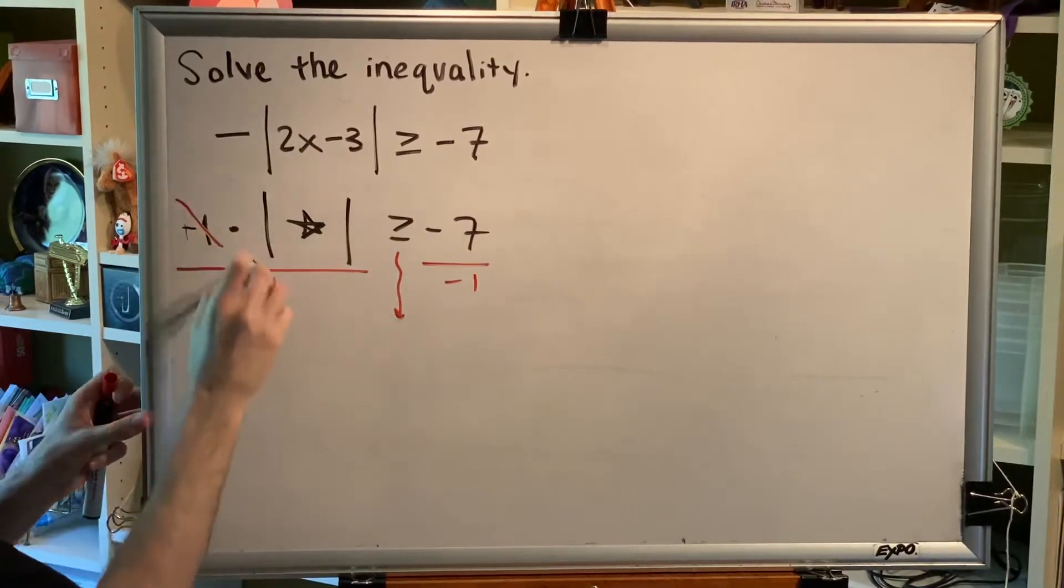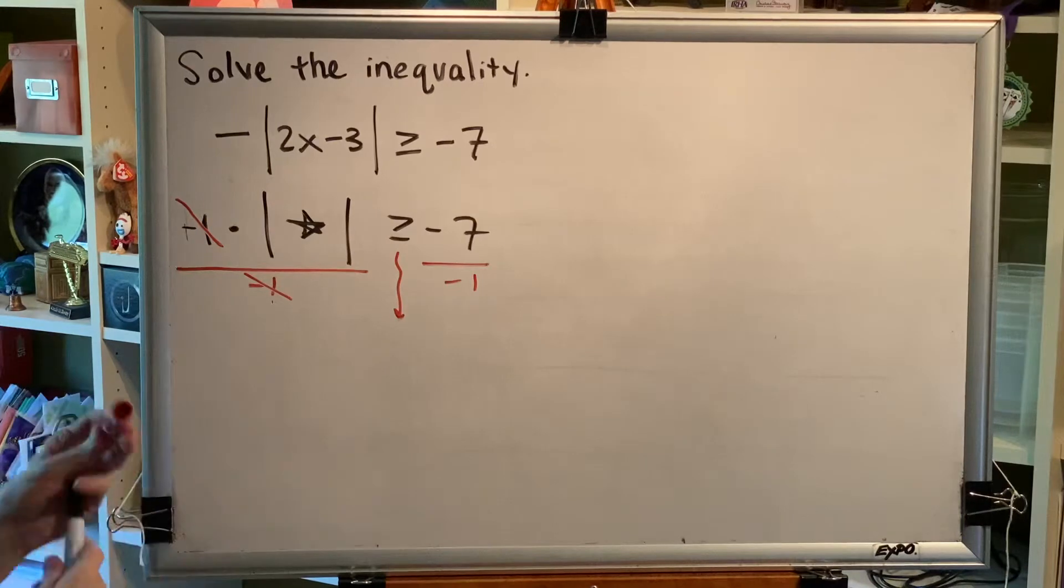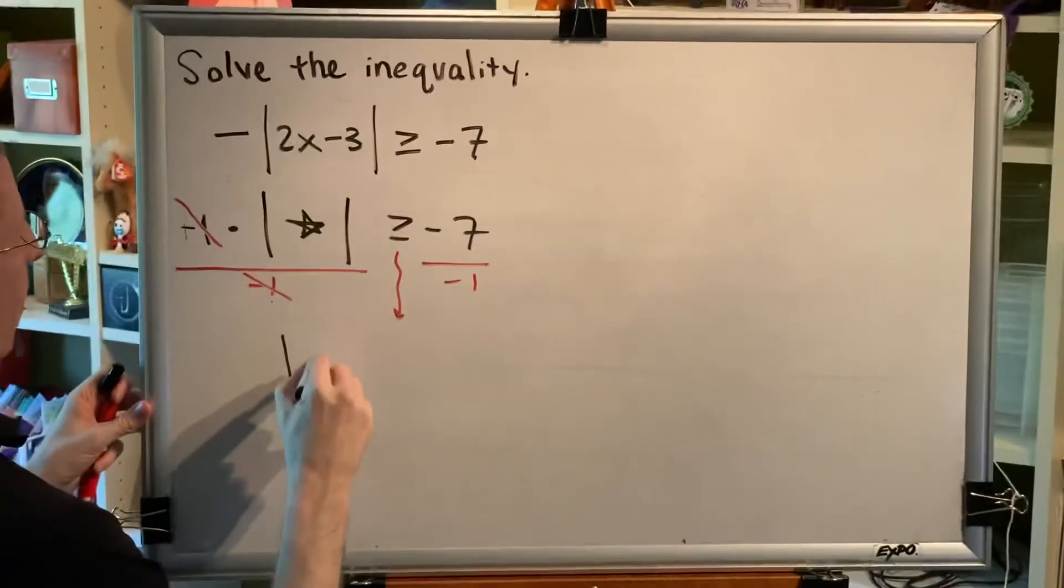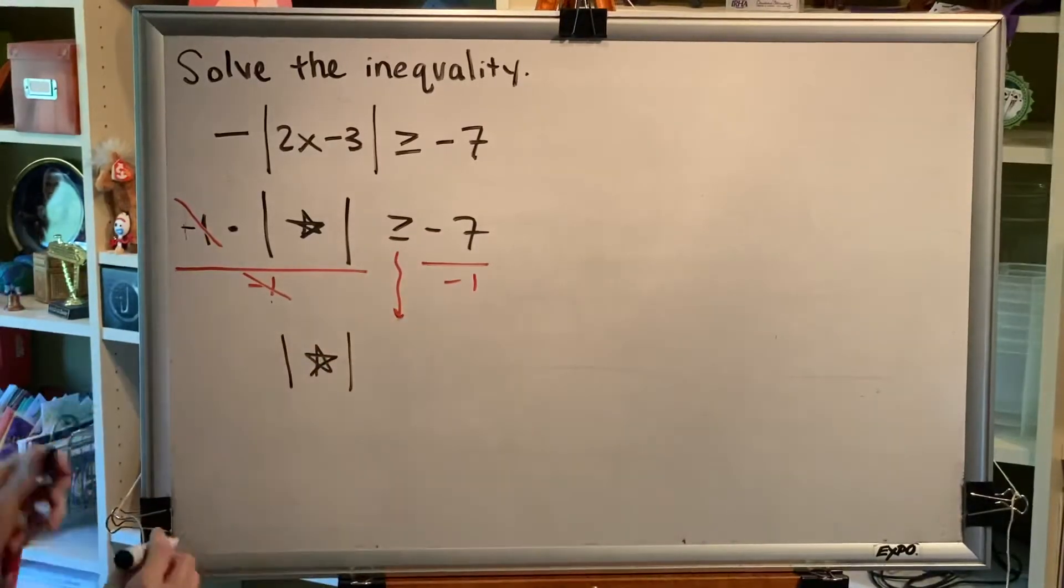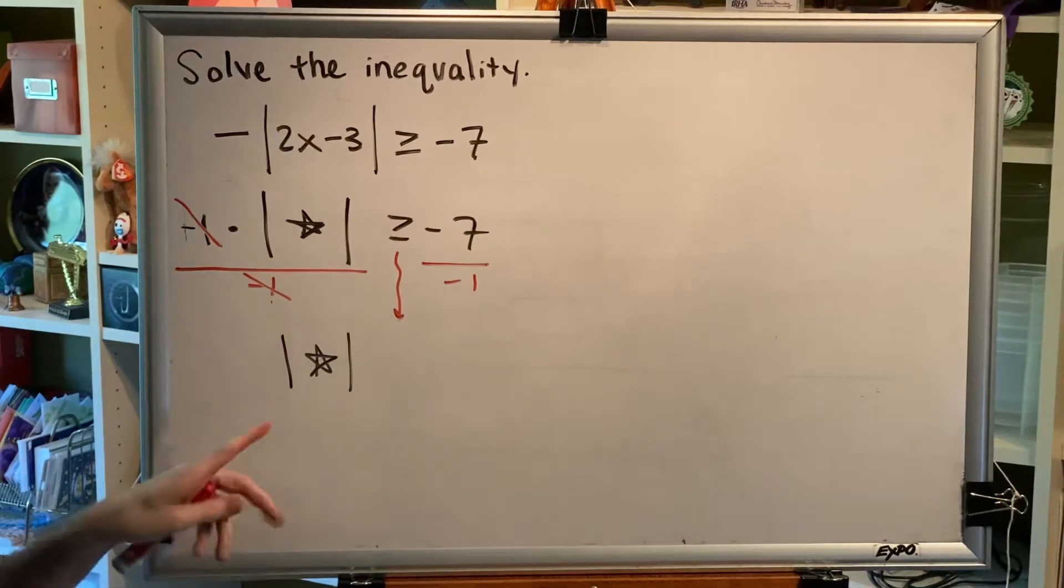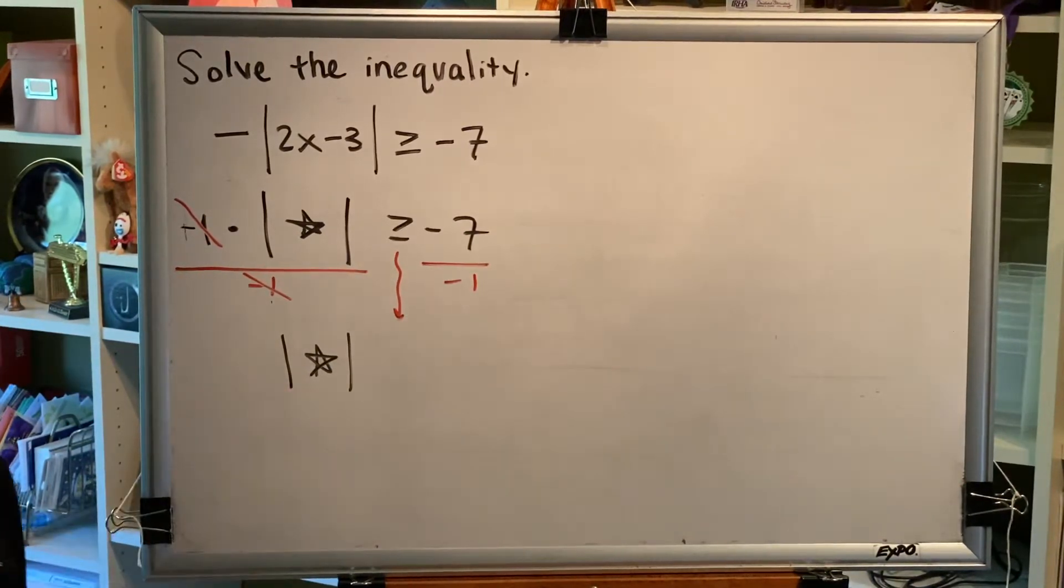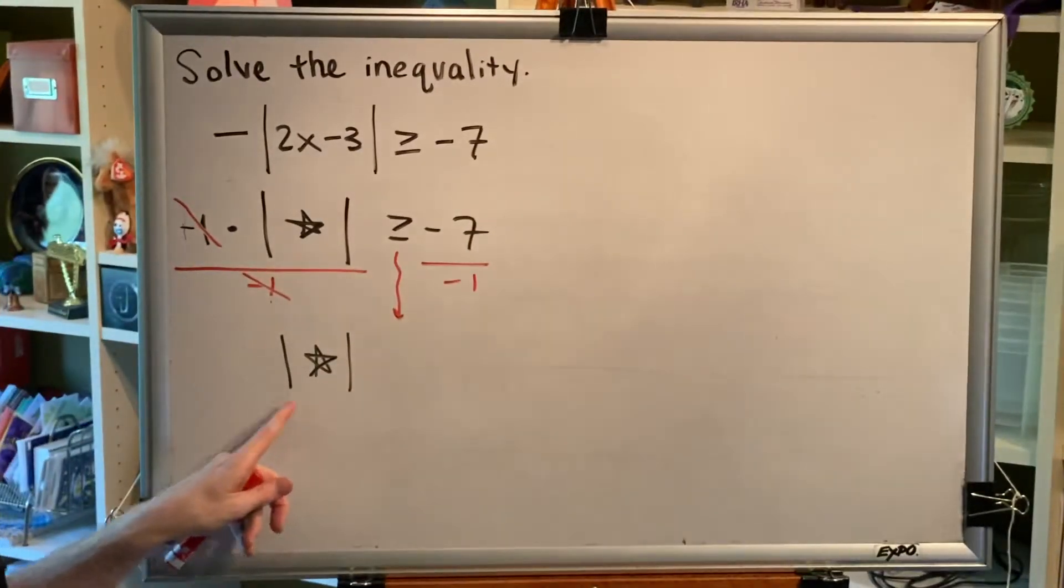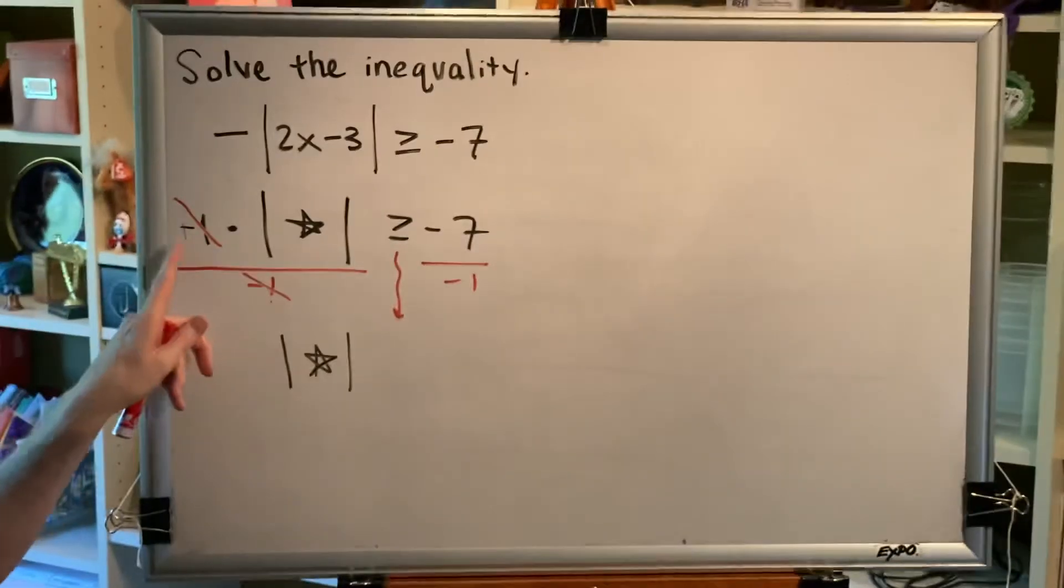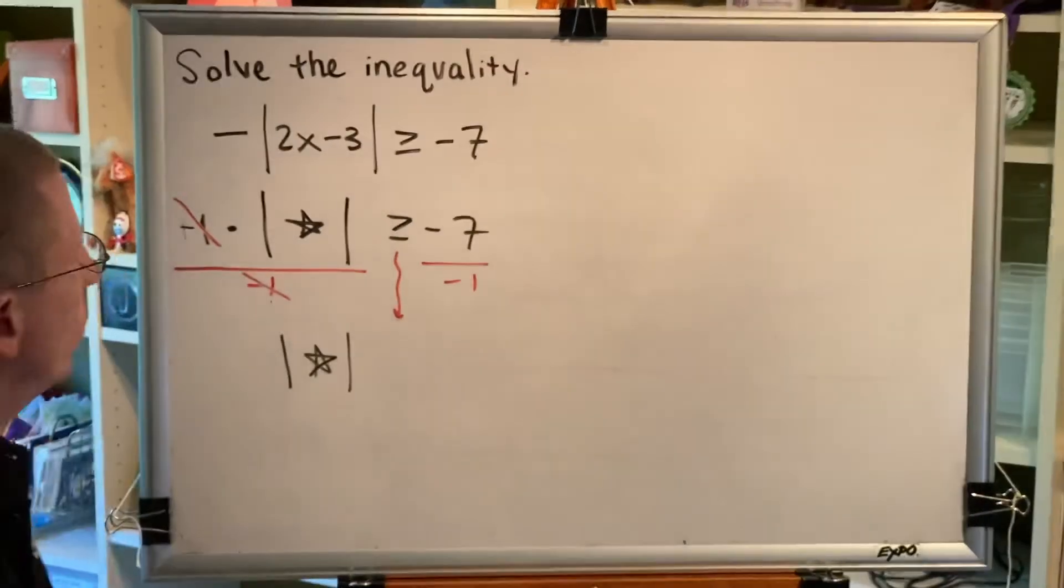All right, so this negative 1 and this negative 1 are going to cancel. And on the left, I'll have the absolute value of star. Students that make mistakes in this problem often make a mistake right here at this step, and they drop their absolute value bars. Remember, the absolute value bars still have to be there. Only the negative 1s have been canceled, not the absolute value bars.